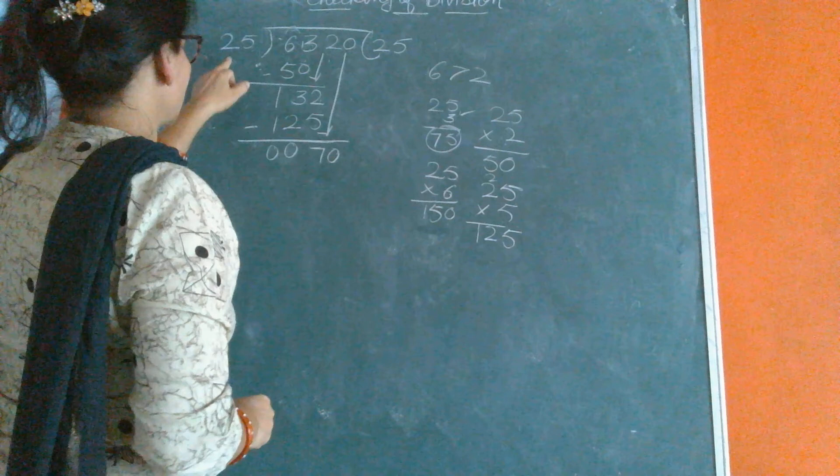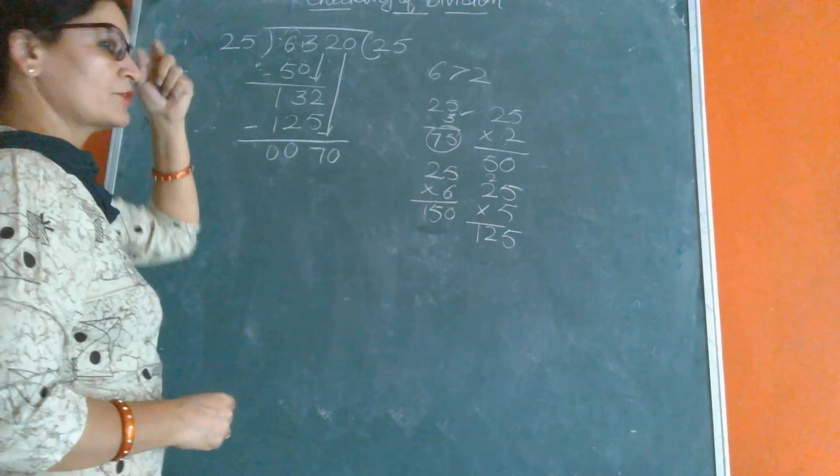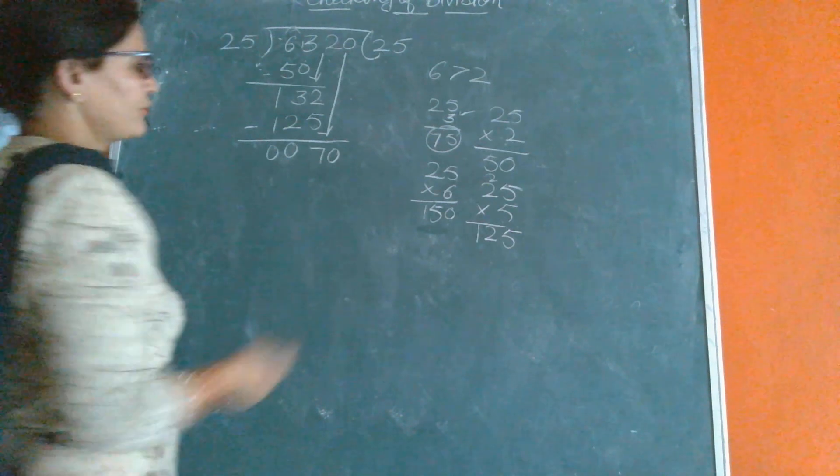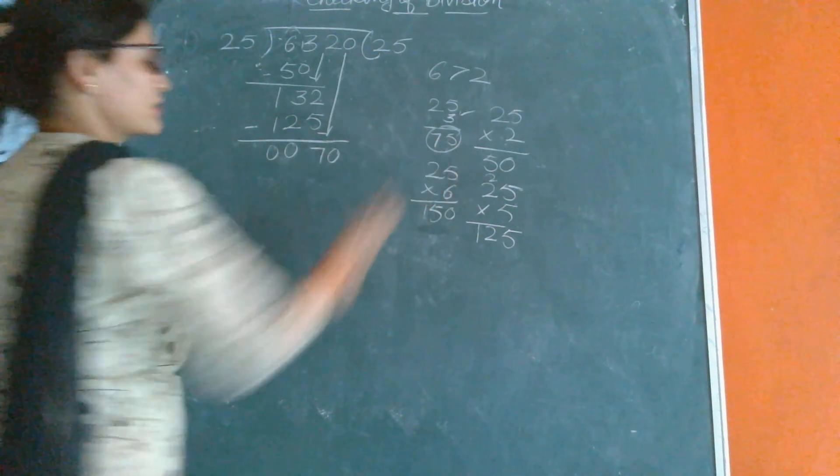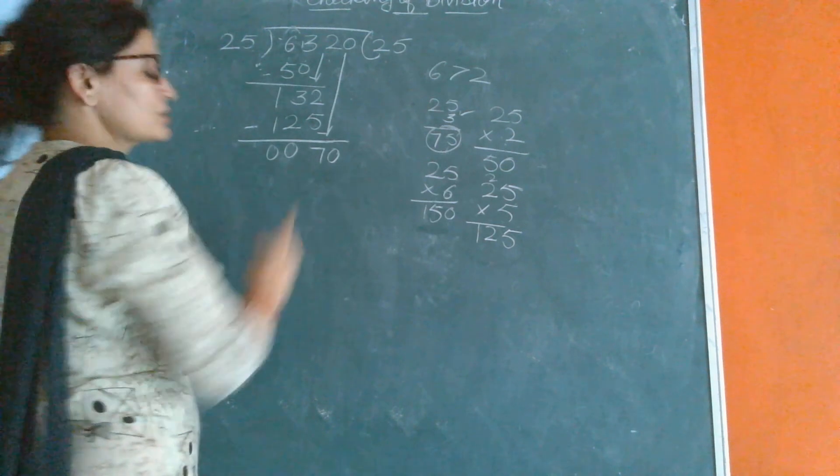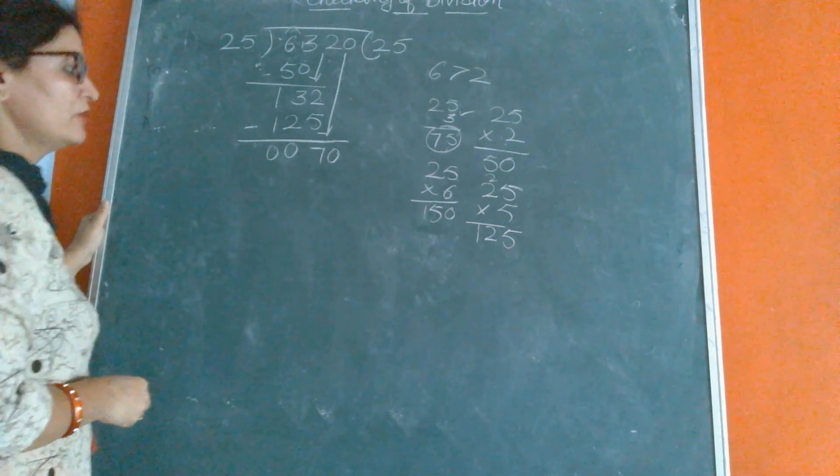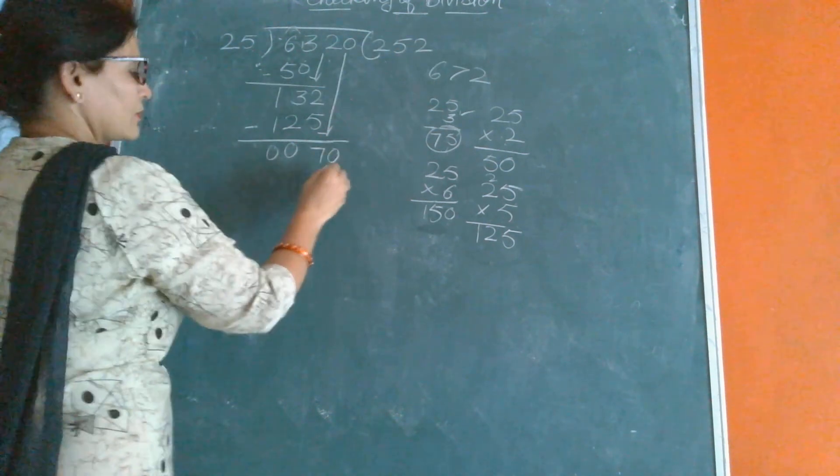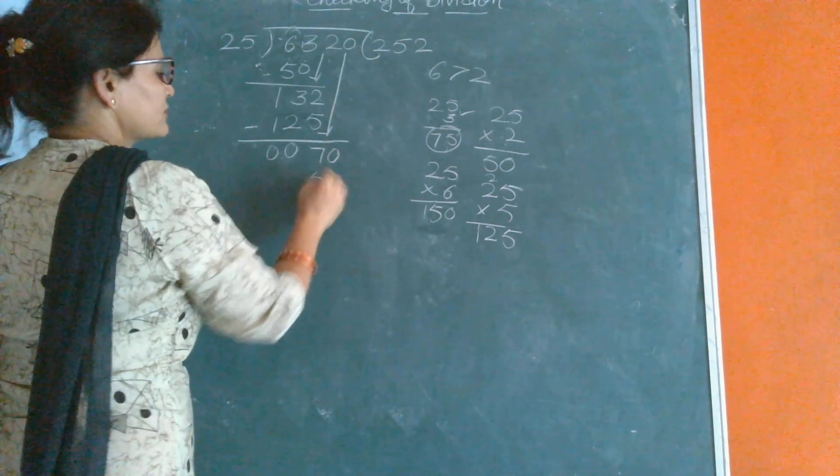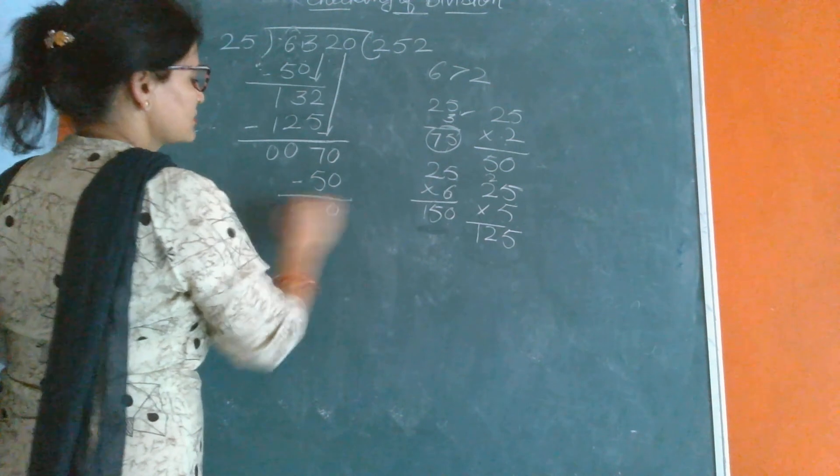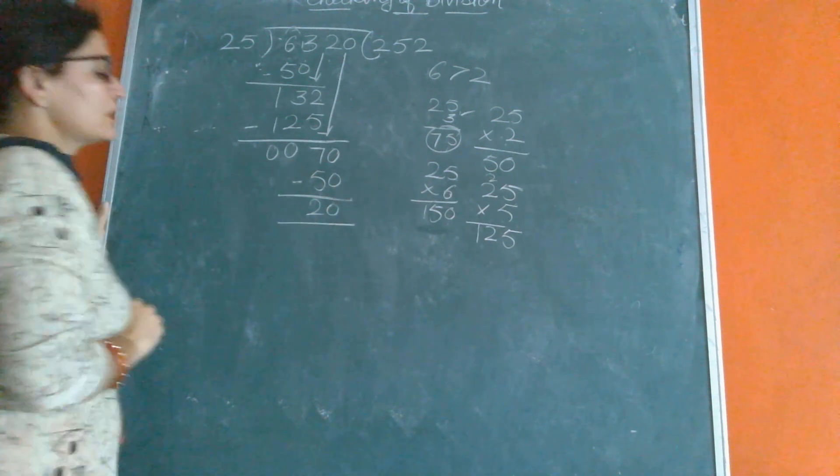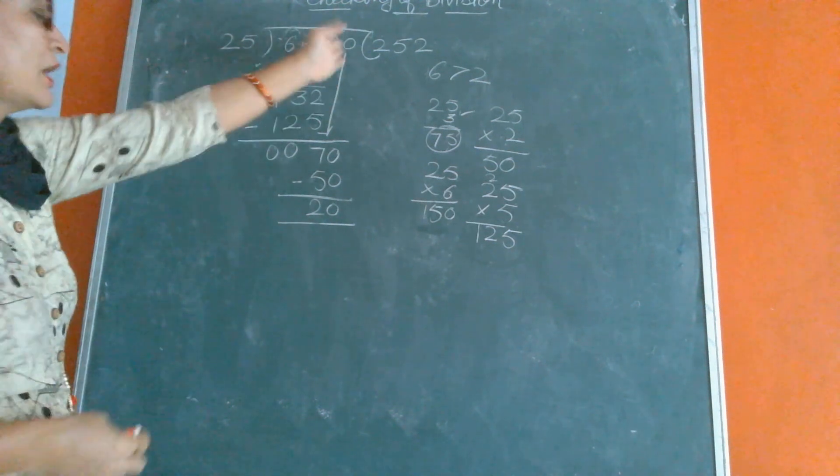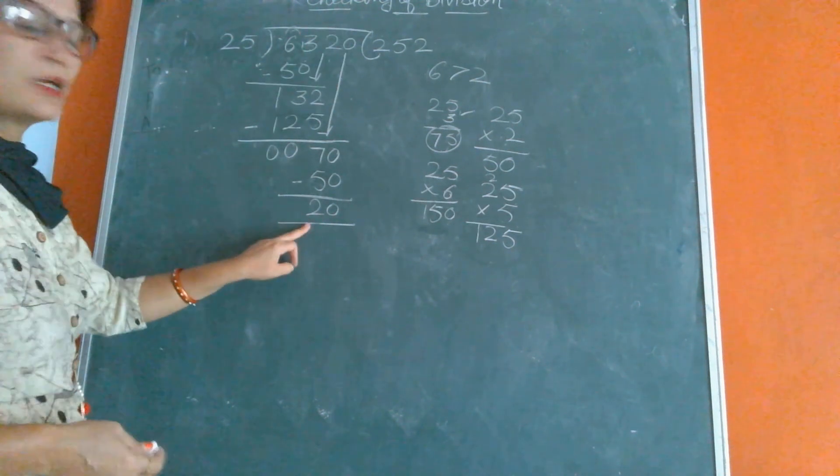70 is greater than 25. Now count the table of 2: 2 times 1 is 2, 2 times 2 is 4, 2 times 3 is 6. 25 times 3 is 75, but 75 is greater than 70, so we can't subtract 75 from 70. It will go on 2. 25 times 2 is 50. Now what is the remaining number? 20. So we have no any digit after 0, so it is remainder.